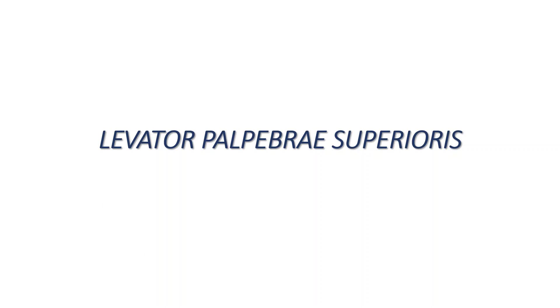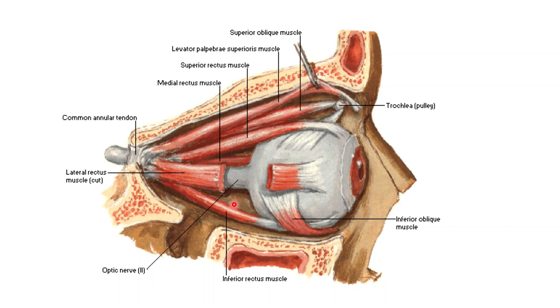The word levator palpebrae superioris itself tells us it is the muscle of the orbit which brings about the elevation of the palpebrae — that is, the eyelid. This is the muscle which mainly brings about the elevation of the upper eyelid. This section visualizes the muscles of the orbit, where we can make out the levator palpebrae superioris along with the rest of the extraocular muscles surrounding the eyeball.